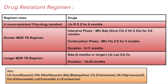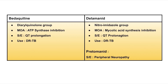The longer MDR-TB regimen is mainly used for XDR-TB patients. It includes bedaquiline for six months or longer, levofloxacin, linezolid, clofazimine, and cycloserine — easily remembered as '2L, 2C, and bedaquiline.' The duration is 18 to 20 months.